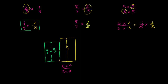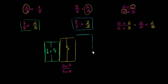Now let's look at the middle expression: 8/7 times 2/3. Well, 8/7 is bigger than 7/7 — it's more than 1. This is 1 and 1/7 times 2/3, so it's going to be larger than 2/3. We scaled 2/3 up because 8/7 is greater than 1. So this height is 8/7 times 2/3.